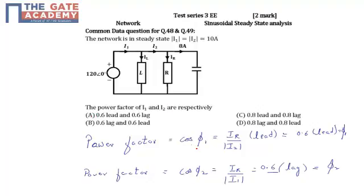However, we can check for i1 also. Power factor for i1 would be ir by |i1|, which would give us 0.6 lag. That is option B. Thank you.